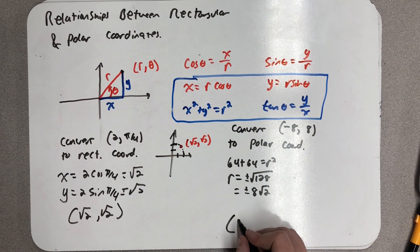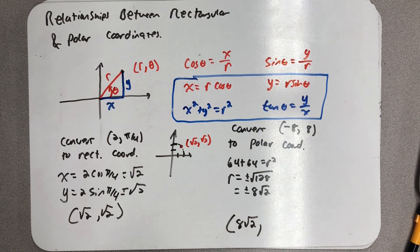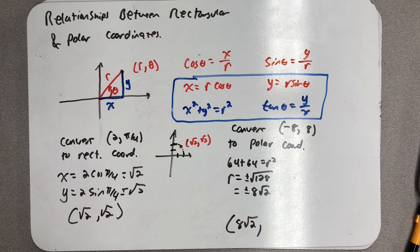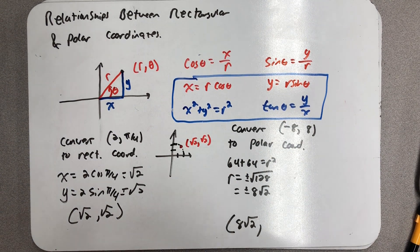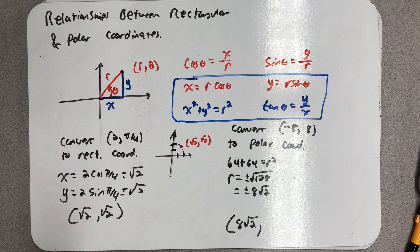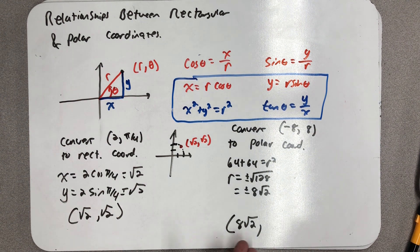Now, when I write my point down, I'm going to choose to make it the positive one. But that's why we don't take the square root in this relationship box, because r could be positive or negative. So 8√2.